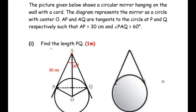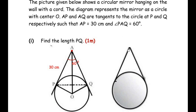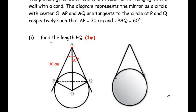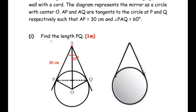The picture given below shows a circular mirror hanging on a wall with a chord. The diagram represents the mirror as a circle with center O. AP and AQ are tangents to the circle at points P and Q respectively, such that AP is equal to 30 cm and angle PAQ is 60 degrees. We need to find the length of PQ.